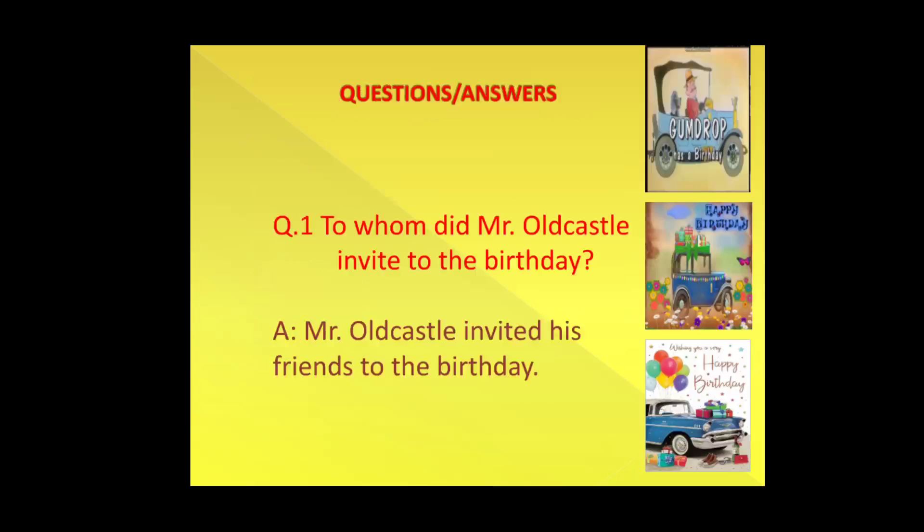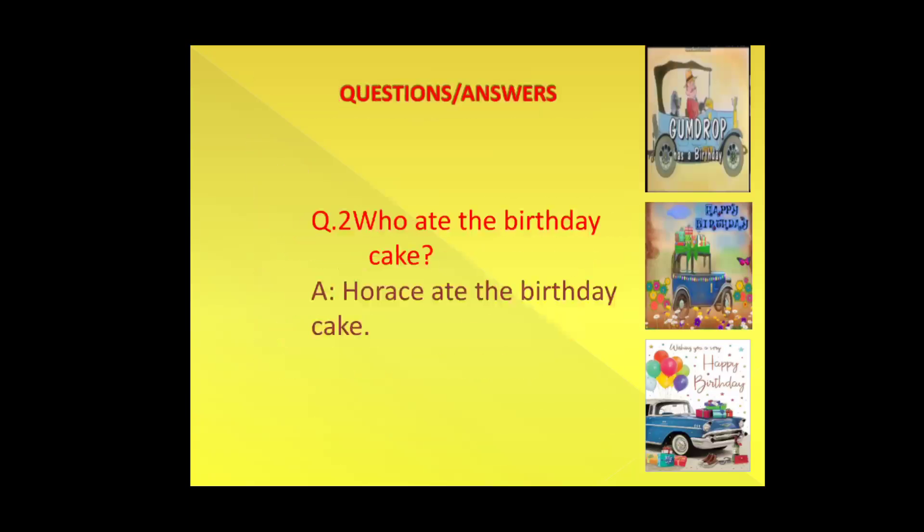Now come towards the question answers. Question number one: to whom did Mr. Oldcastle invite to the birthday? Mr. Oldcastle invited his friends to the birthday. Note that Mr. Oldcastle is a proper noun, so both M in Mr. and O in Oldcastle start with a capital letter, because proper nouns always start with a capital letter. Next question: who ate the birthday cake? Answer: Horace ate the birthday cake — H-O-R-A-C-E.